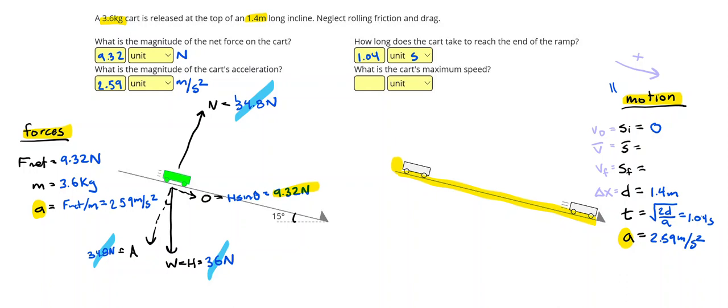And then the cart's maximum speed, well, I can just use, if the initial speed is zero, I can do initial speed plus acceleration times time, or the same thing with velocities. Since the initial speed is zero, it's really just the acceleration times the time. And I got 2.69 meters per second as the final or maximum speed.